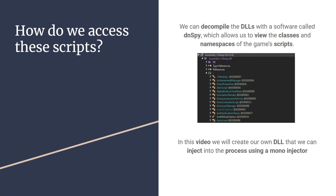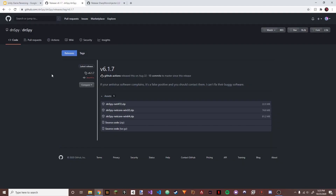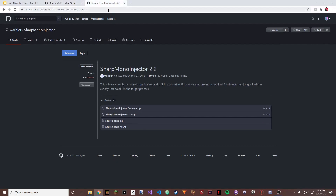To actually read the source code, we decompile the DLLs using a software called DNSpy, which lets us view the classes and namespaces of these scripts. In this video, we'll create our own DLL and inject it into the process using a mono-injector — which is different from a normal injector you might use for other games. I recommend downloading the DNSpy .NET version and the GUI version of the mono-injector; I'll put links in the description.